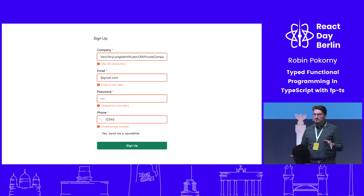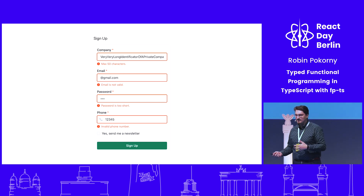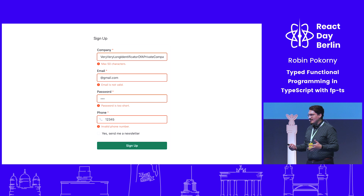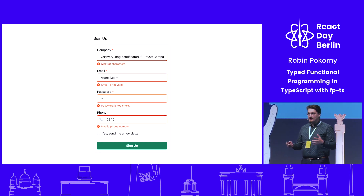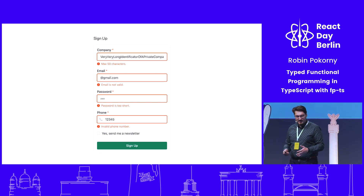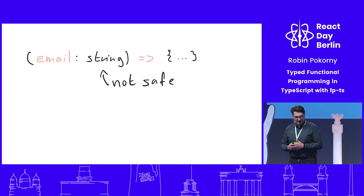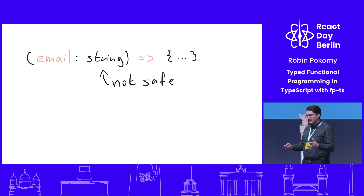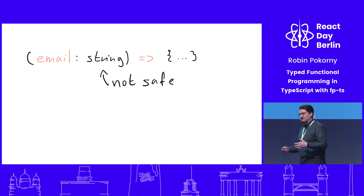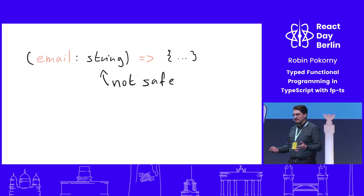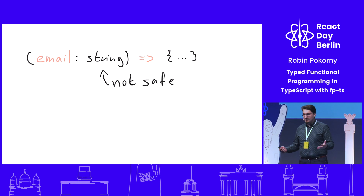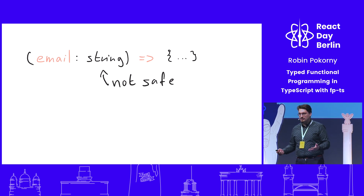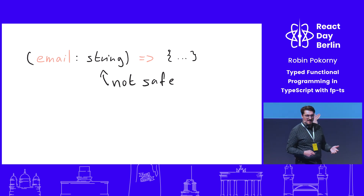Even though we have some libraries that can somehow assert that something is, for example, an email or a phone number, what happens after you validate this form is you come to your JavaScript and you have functions — and it's a string. The only annotation you can do, usually, is a string, and then it's very unsafe. You can call this function with any string. You have no guarantee it's going to be an email. Will you do a runtime check? Will you do it for every function that wants an email? That's crazy.